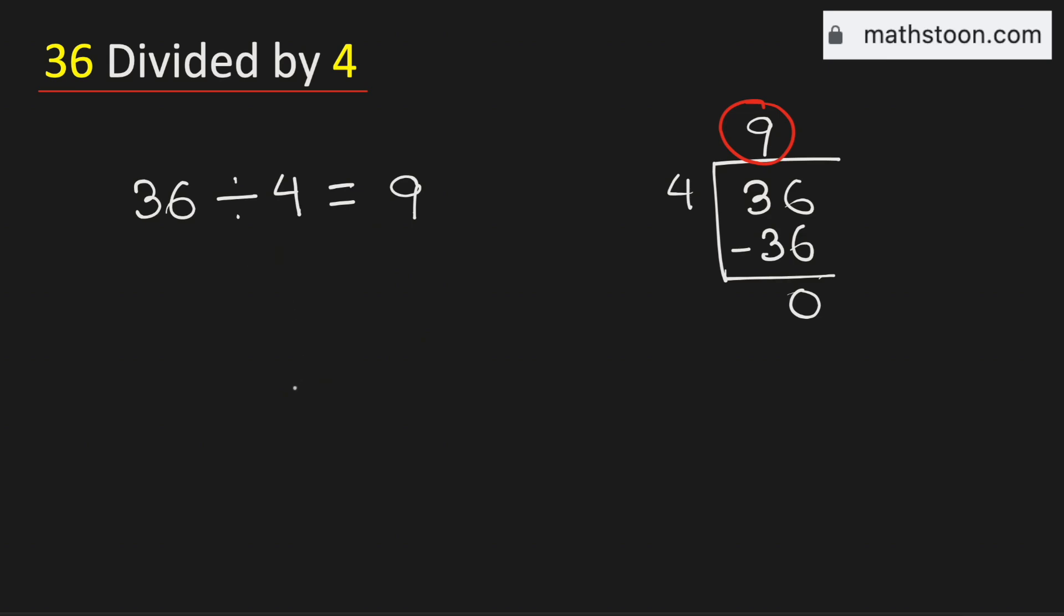Now this can be done in some other way. We know that 36 divided by 4 can be written as 36 over 4.